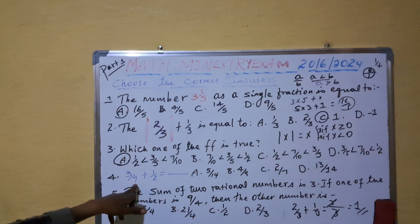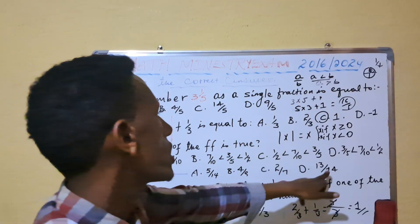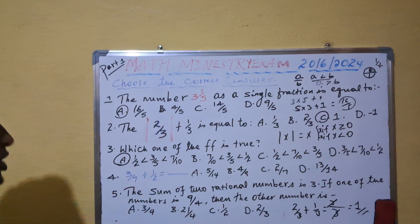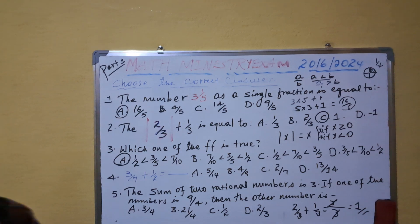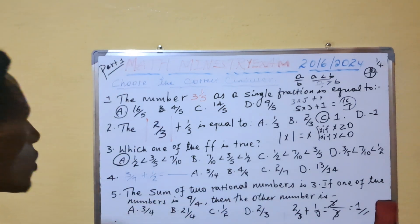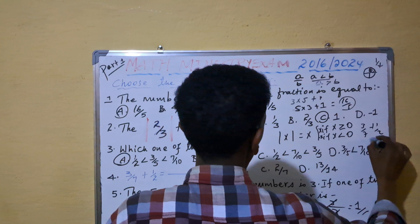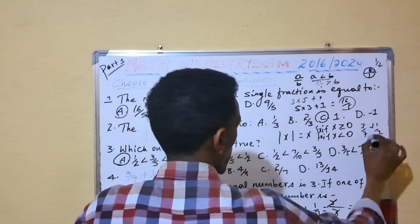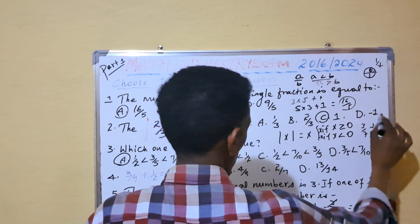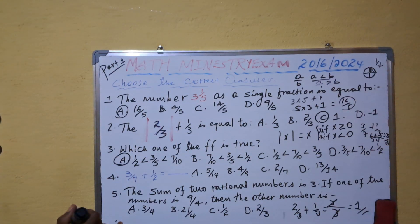Question number 4 says: 3 over 7 plus 1 over 2 is equal to — A) 5 over 14, B) 4 over 9, C) 2 over 7, D) 13 over 14. This is adding fractions with different denominators. The LCM of 7 and 2 is 14. So: 14 divided by 7 is 2, times 3 is 6; plus 14 divided by 2 is 7, times 1 is 7. That gives 6 plus 7 equals 13 over 14. The answer is D) 13 over 14.